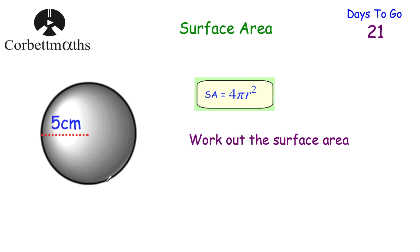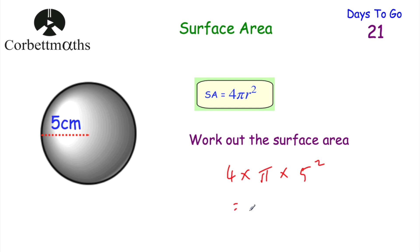Here we've got another sphere — can you find the surface area? Remember: surface area of a sphere is 4πr². We do 4 × π × 5² (radius is 5 centimetres). For a non-calculator question: 5 squared is 25, times 4 is 100, so 100π centimetres squared. As a decimal, that's 314.159 centimetres squared, and rounded to two decimal places: 314.16 centimetres squared. Well done if you got that.